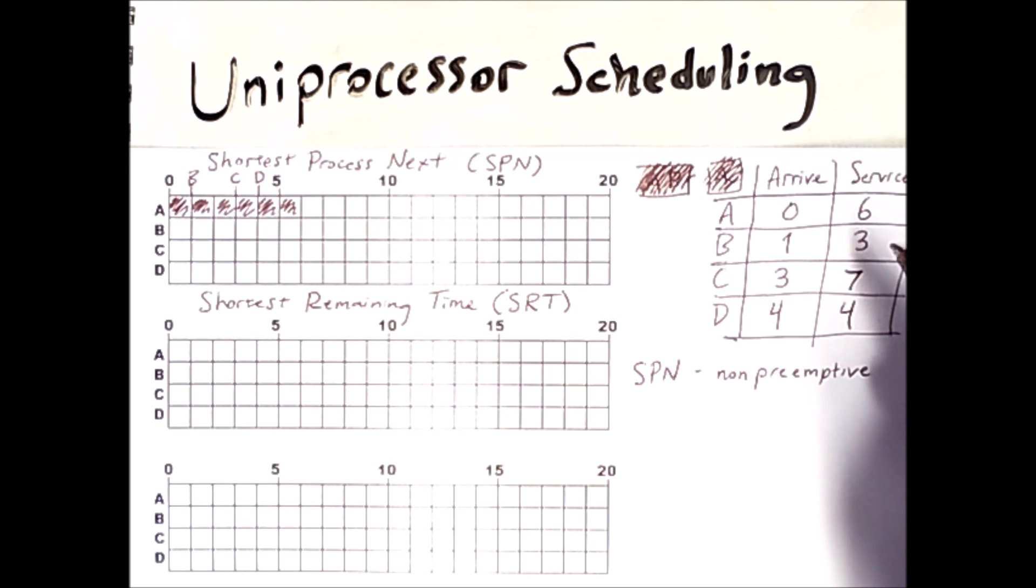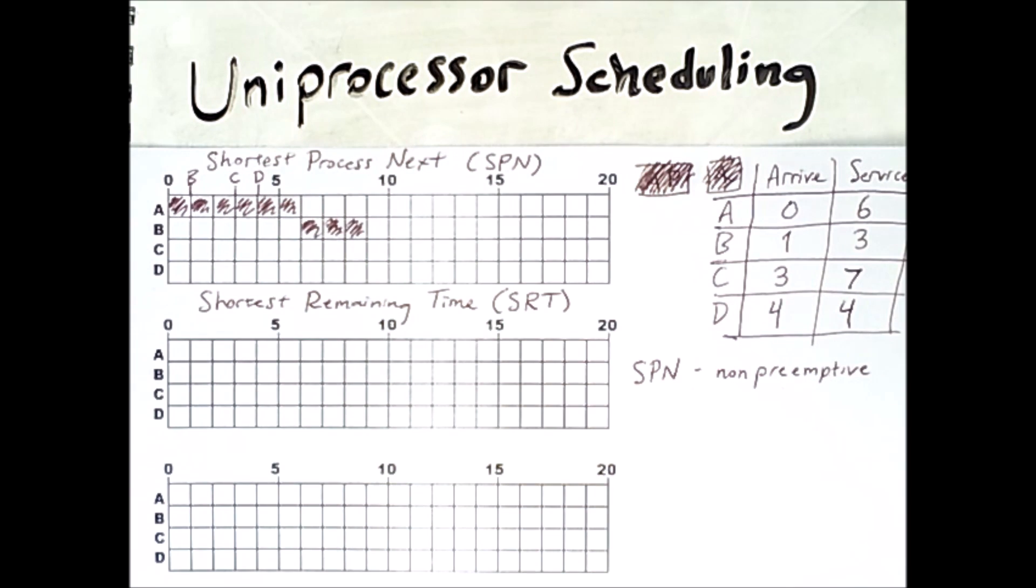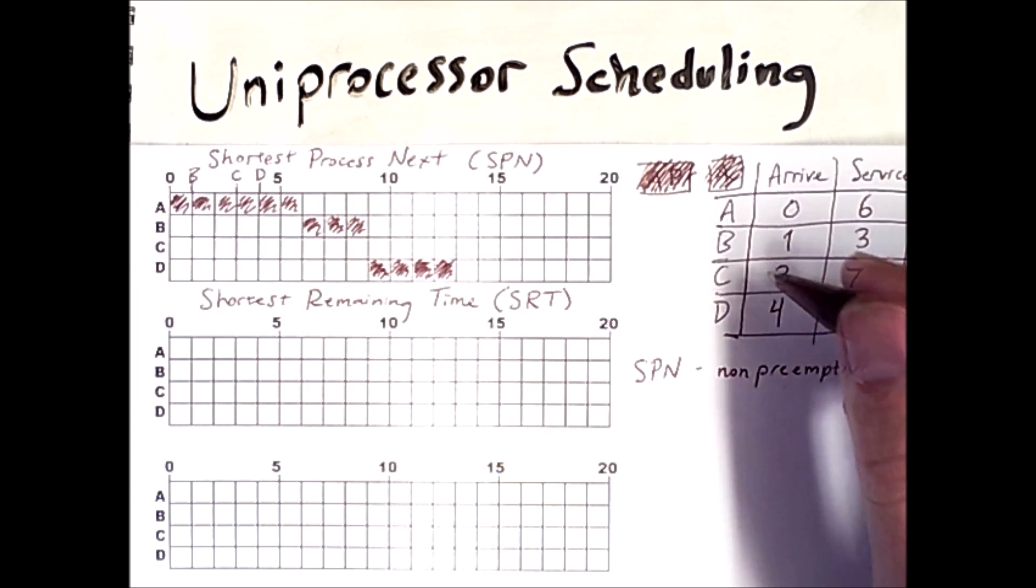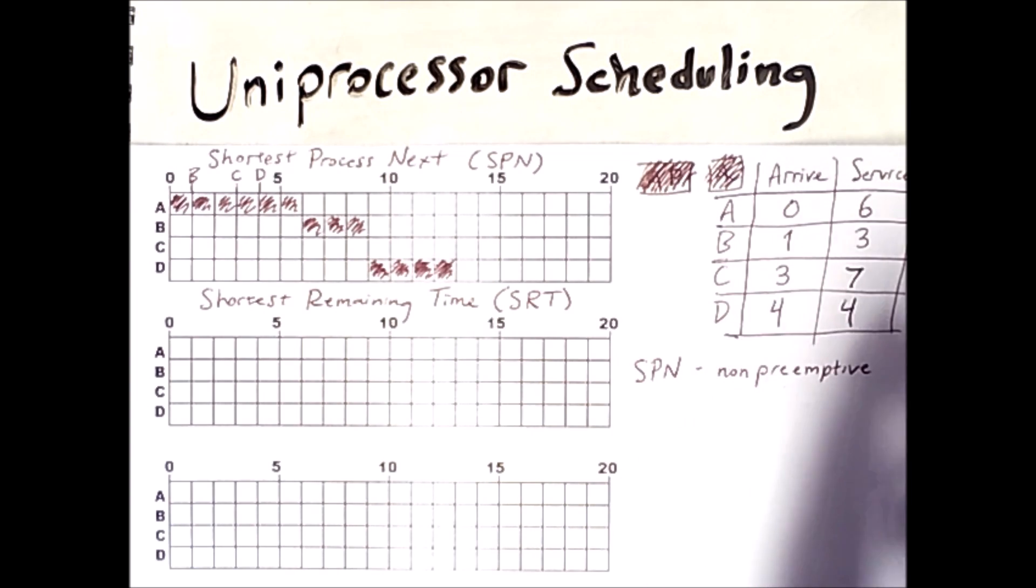Now that A is finished, we see which of the remaining processes has the shortest service time. B is the shortest and it goes next. Now the only processes left are C and D, whose service times are seven and four respectively. And since four is smaller, D will run next. At this point, the only process left is C, so now it will run for its seven time units.